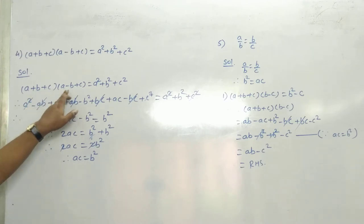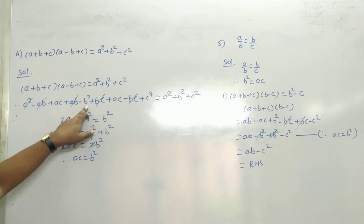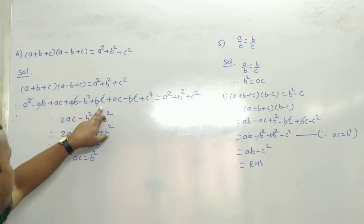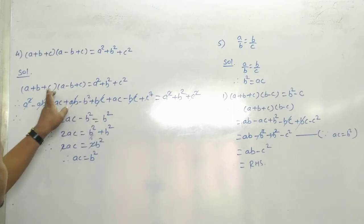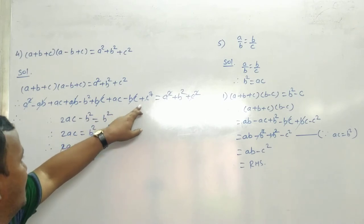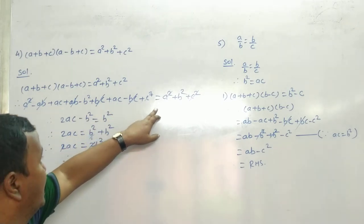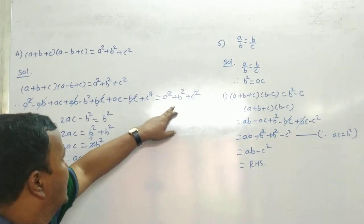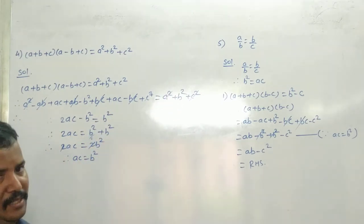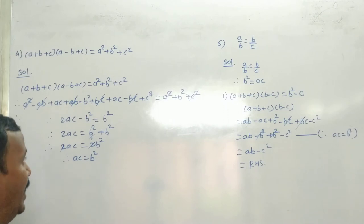फिर B से: B into A = AB, B into minus B = minus B square, B into C = BC. फिर C से: C into A = AC, C into minus B = minus BC, C into C = C square. So the full expansion is equal to A square plus B square plus C square.